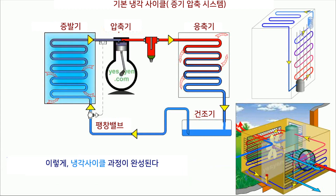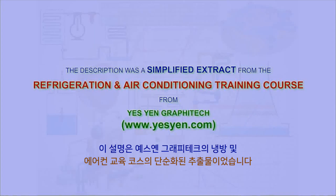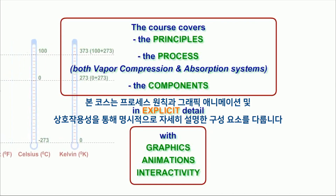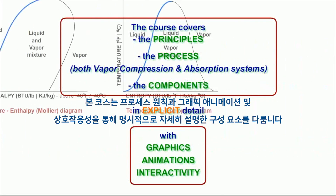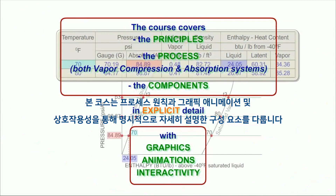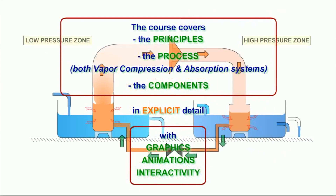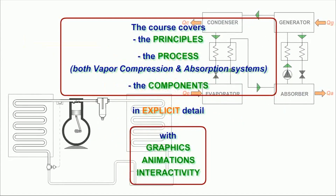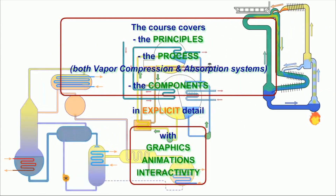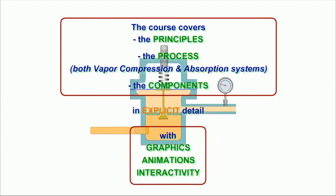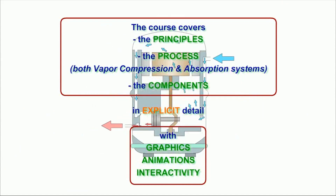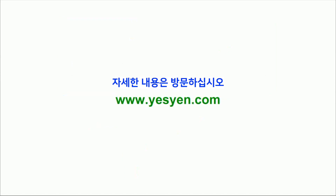Thus the refrigeration cycle achieves the cooling process. This description was a simplified extract from the Refrigeration and Air Conditioning training course from Yesyen Graphitech. The course covers the principles, the process, and the components in explicit detail, with graphics, animation, and interactivity. For more details, visit yesyen.com.